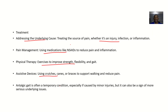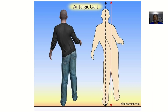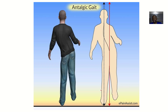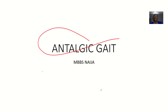In conclusion, antalgic gait is often a temporary condition, especially if it is caused by minor injuries. But it can be a sign of a more serious underlying condition, so it should be handled with urgency.